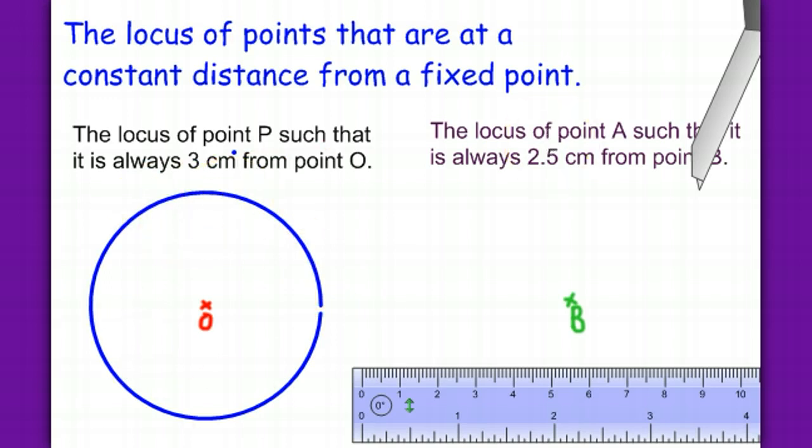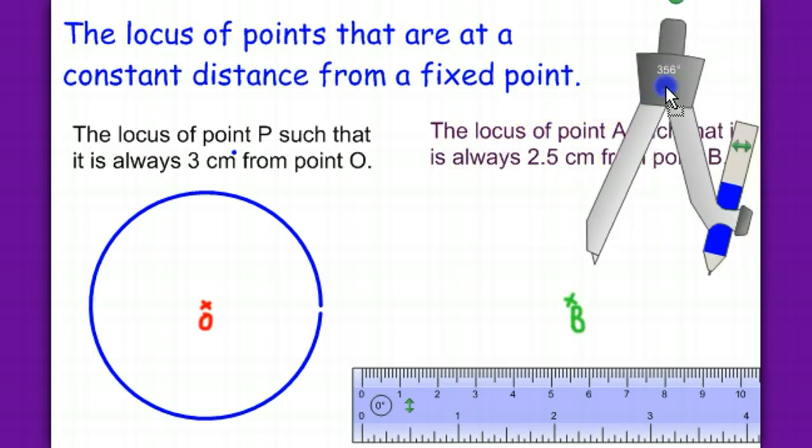And second example. The locus of point A such that it is always 2.5 cm from point B. So, the same thing.